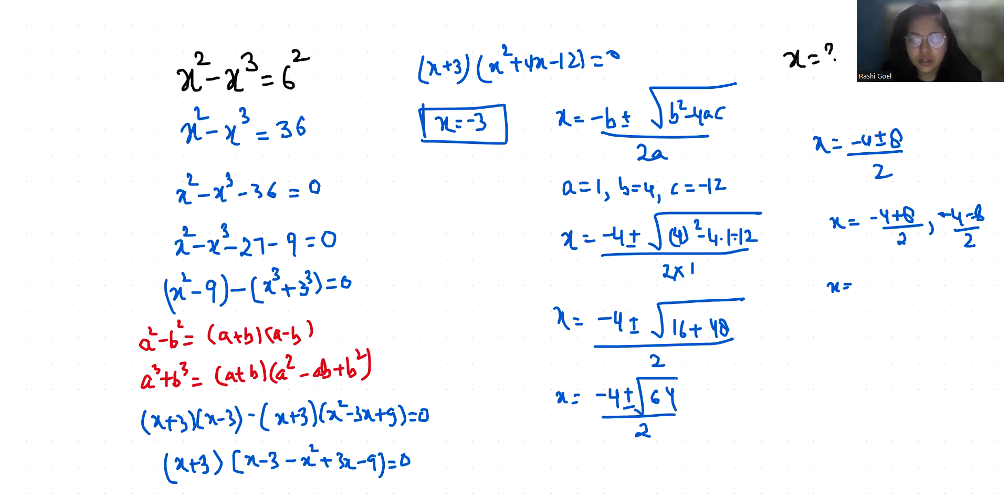Sorry, this is minus x squared, so this is minus 1, so minus 48. So 16 minus 48 is negative 32, which I can write it as minus 4 plus minus 4 root 2 i by 2.